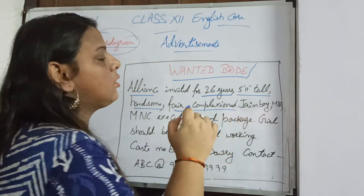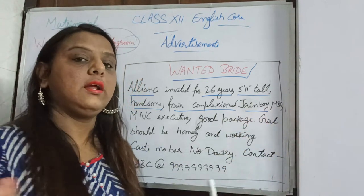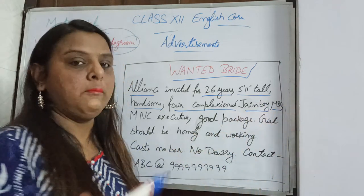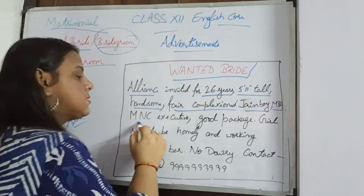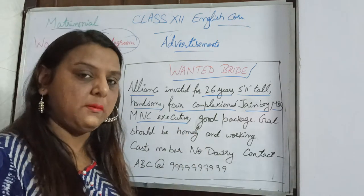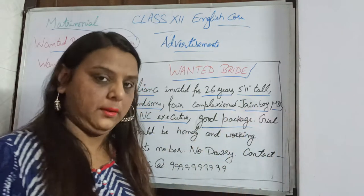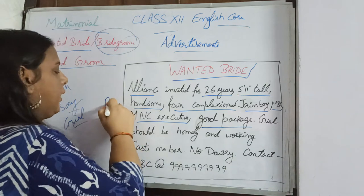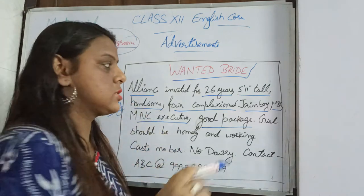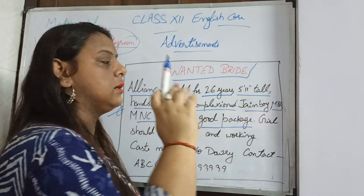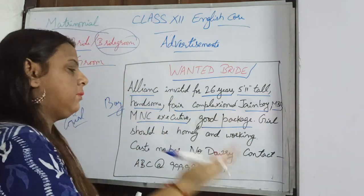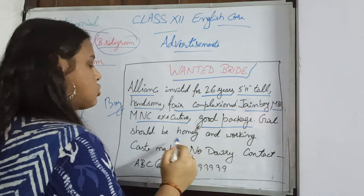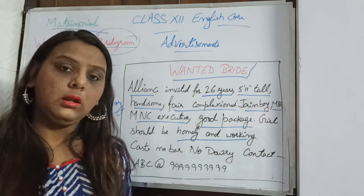You also mention fair complexion and even the caste. Then 'MBA' — so he did an MBA — and 'MNC executive,' meaning he is working in an MNC with a good package, good salary. So here you are giving the details of the boy: 26-year-old, his height, handsome, belongs to the Jain community, done MBA, working in an MNC with a good salary.